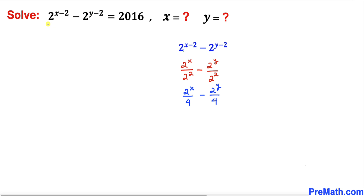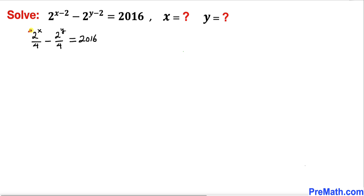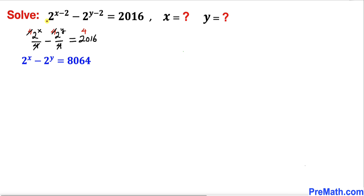We replace the left hand side with the simplified form: 2 power x divided by 4 minus 2 power y divided by 4 equals 2016. Now let's remove the fractions by multiplying every term by 4. The 4s cancel, giving us 2 power x minus 2 power y equals 4 times 2016, which is 8064.